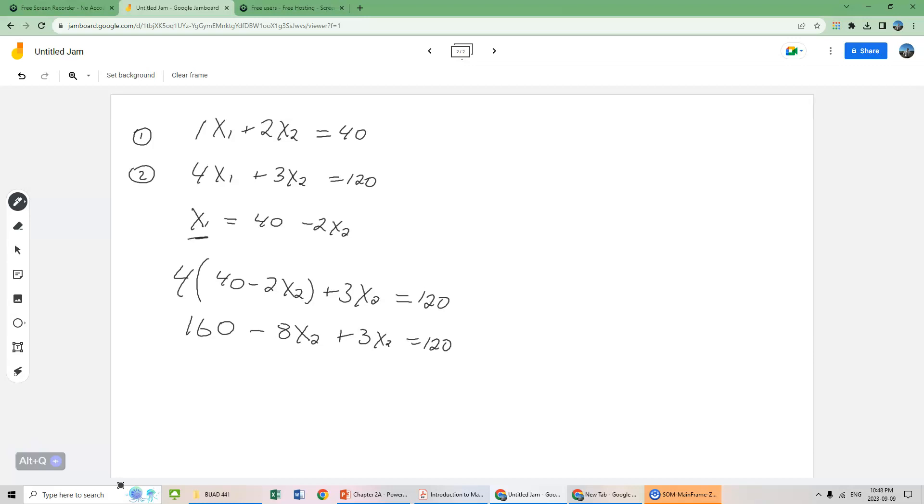4 times negative 2 is negative 8x2 plus 3x2 equals 120. Getting all the x2's on one side, we have negative 8 plus 3. So we have negative 5x2, and we're going to bring this 160 over to the other side. So it's 120 minus 160, it's going to be minus 40. Dividing by negative 5, x2 gives us 8.